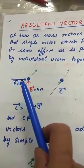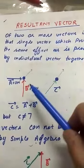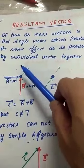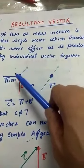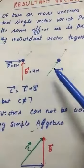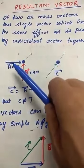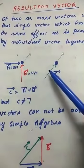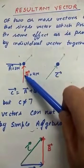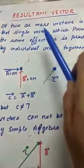Suppose a body is there and we are applying two forces on it — one along one side and another along another side. The body will displace in a third direction, neither in the direction of force A nor force B. Now if we apply only one force C, the body displaces in that same direction. So force C has done the same effect as the two forces together — meaning C is the resultant of those two vectors.